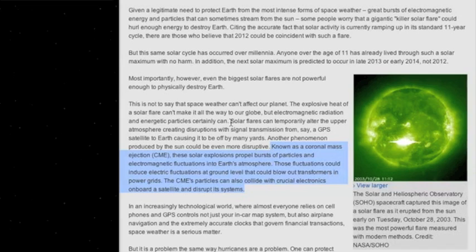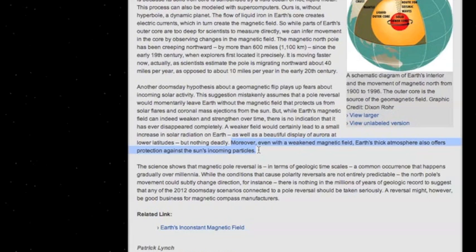Either a coronal mass ejection or a solar flare could render a satellite useless. Yes, those very same satellites we rely on. And like it or not, think it's crazy or not, you can't dismiss the statistical correlation between electromagnetic fluctuations, disturbances, and seismicity.